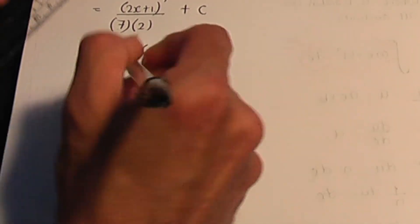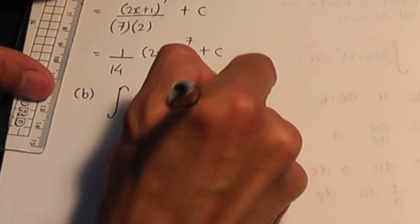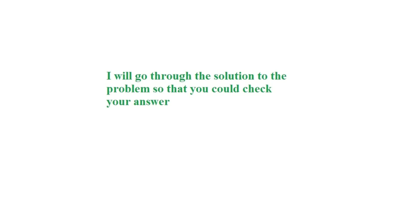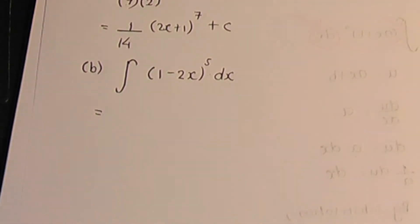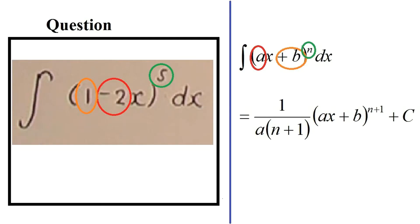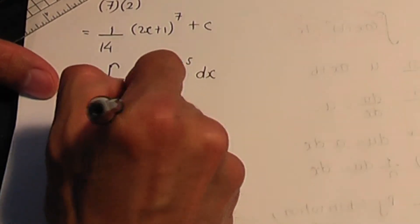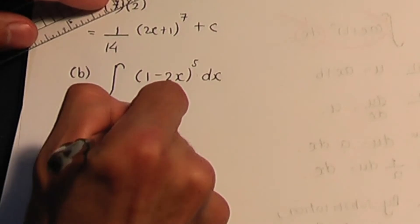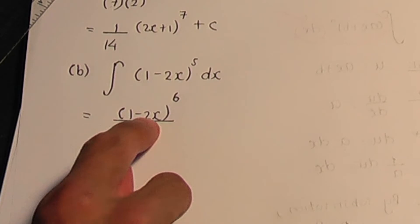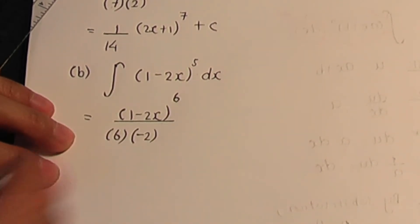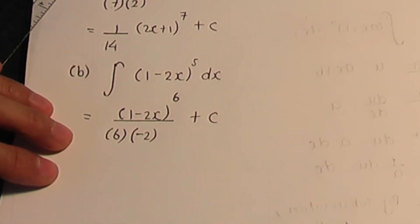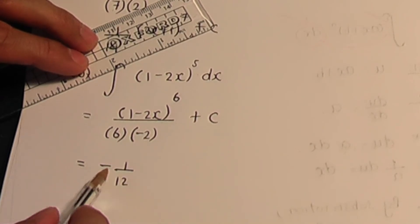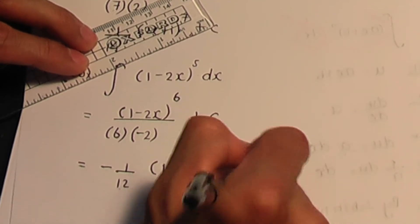Let's try another one, part b: integrate 1 minus 2x to the power of 5 with respect to x. Our integral is of the form ax plus b to the power of n. We get 1 minus 2x to the power 5 plus 1 — that's 6 — divided by 6. Be careful: divide by the derivative of 1 minus 2x, which is minus 2. Then add c. Simplifying: 6 times minus 2 is minus 12, giving minus (1/12)(1−2x)^6 plus c.